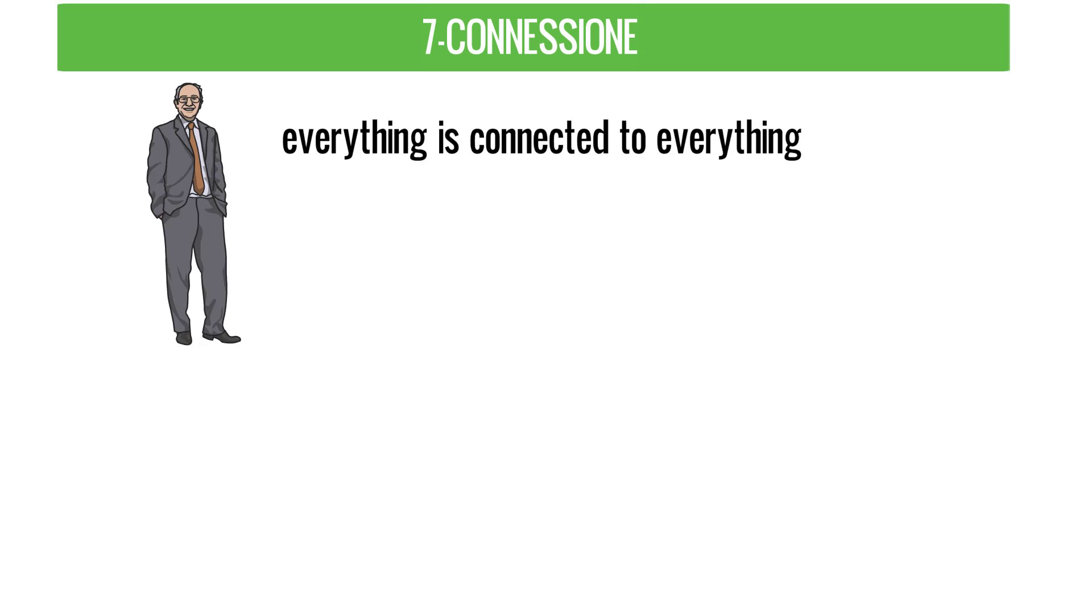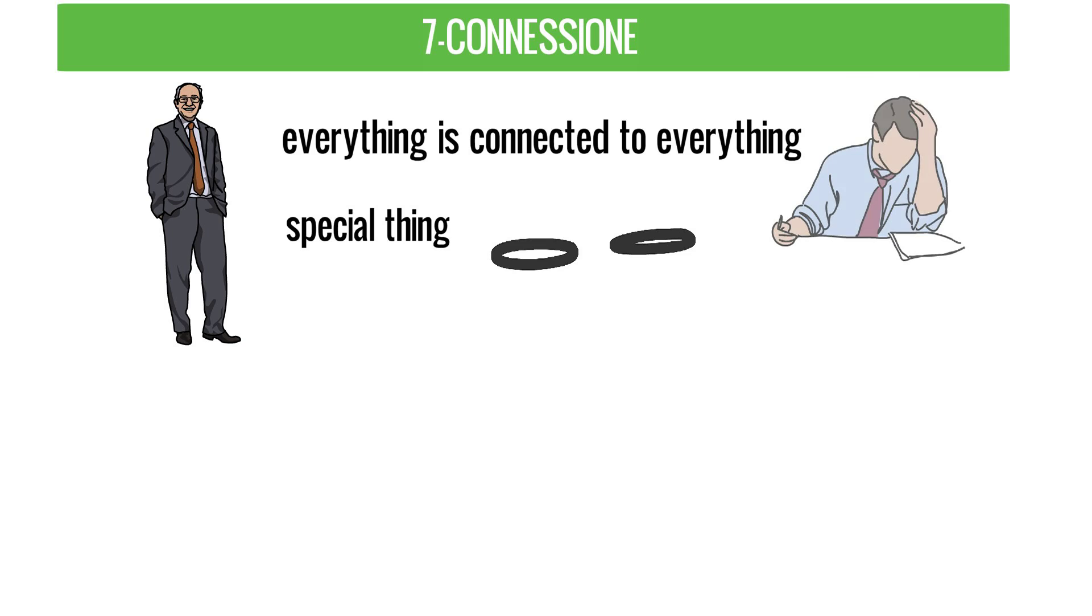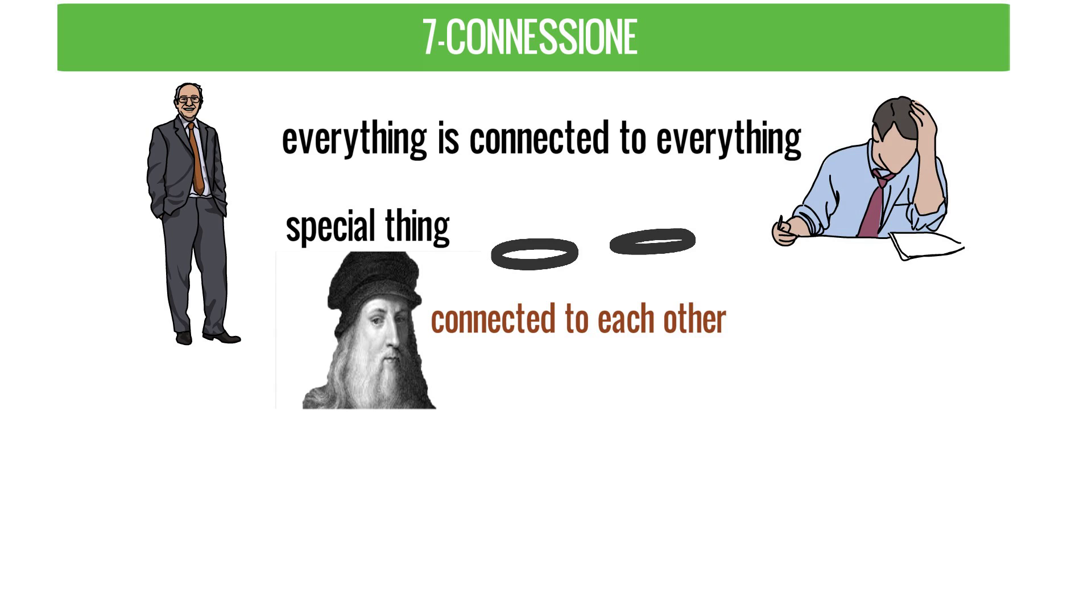Seventh, Connessione. Meaning everything is connected to everything. Genius people have one more special thing. They see connection in different fields and things and also use it by understanding it. Da Vinci has a belief that yes, everything is connected to each other. For example, from this principle, we can learn two things.